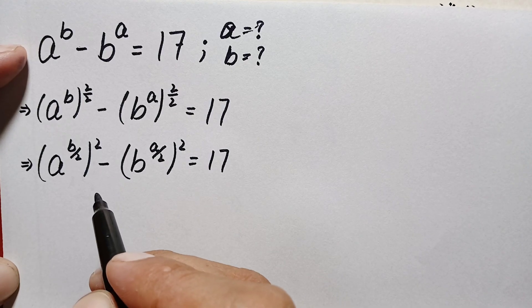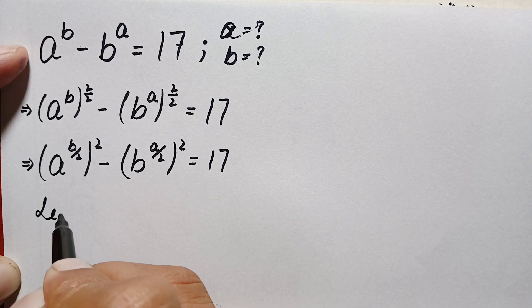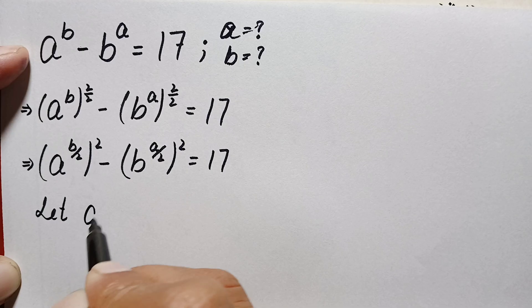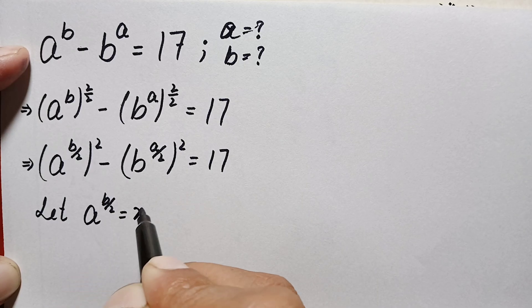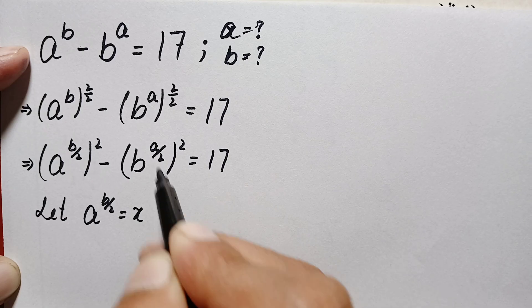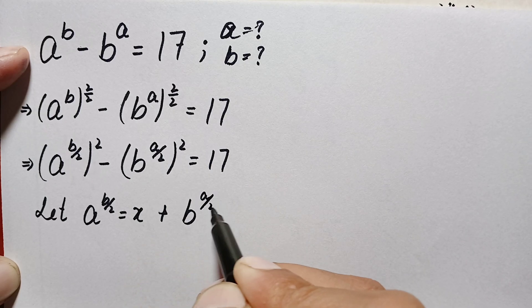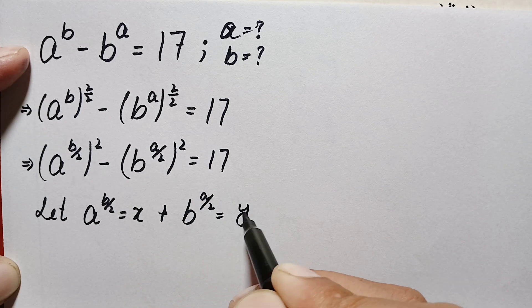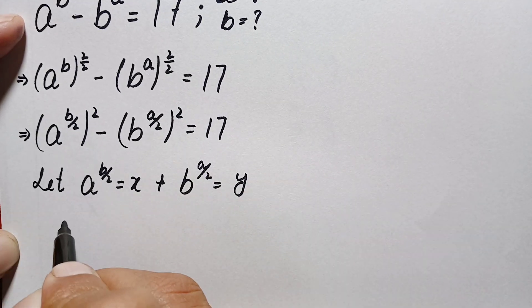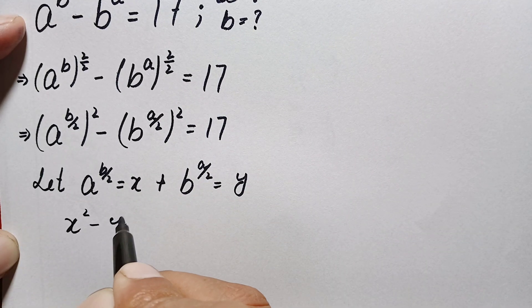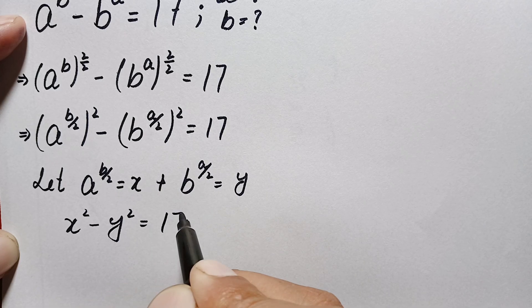Now on the left-hand side we will make some substitutions. Let a raised to power b/2 equal a new variable x, and let b raised to power a/2 equal y. So this equation becomes x squared minus y squared equals 17.